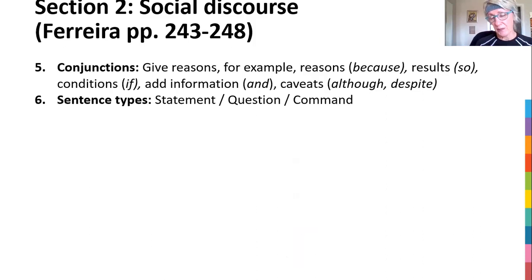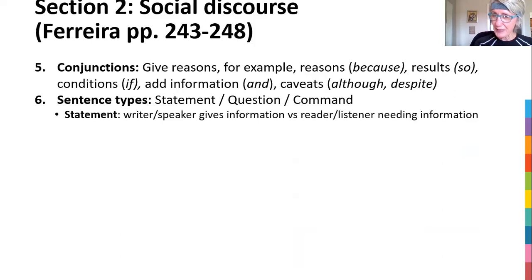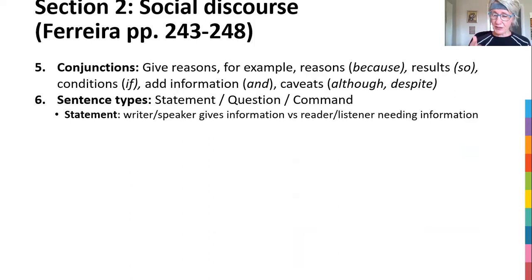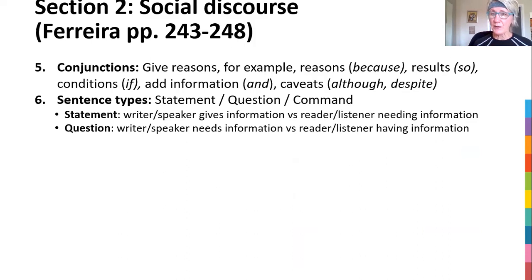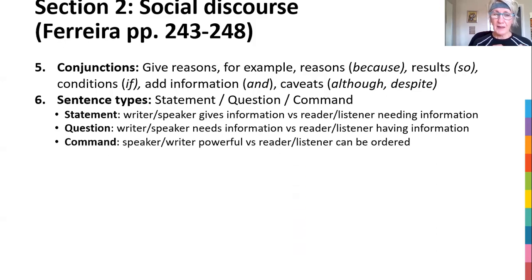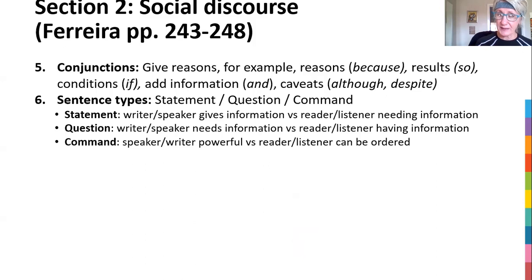Sentence types: you can have a statement, question, and command. If there are a lot of statement type sentences, they're using direct information delivery — if I'm the writer or speaker, I'm giving out the information, so I'm powerful, but if you're the reader or listener, you need that information, so you're not as powerful as me. If there are a lot of questions, it means the writer or speaker needs information, and the reader or listener has the information — so lots of questions often means the reader has the power. Commands: the speaker or writer is powerful, making you do something, but if you're the listener or reader, you can be ordered and you are less powerful. So just check the kind of sentences that are being used.